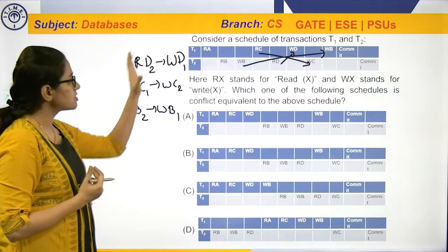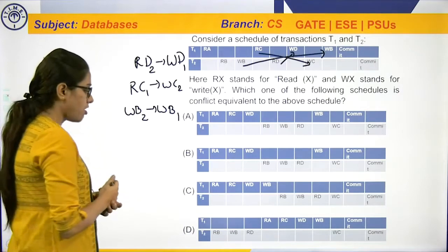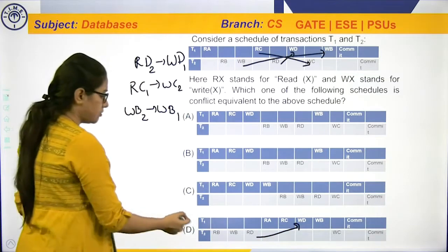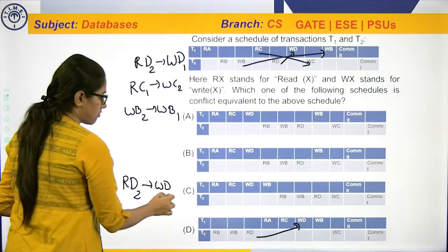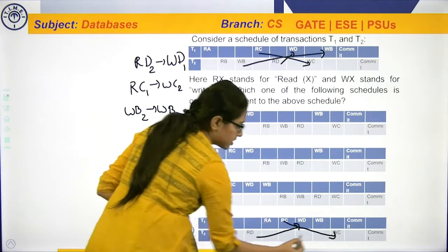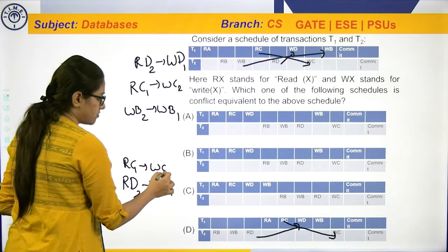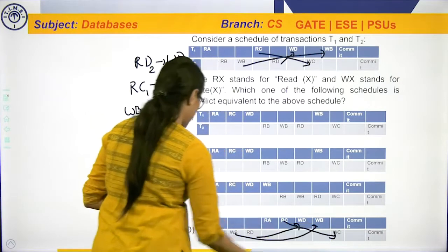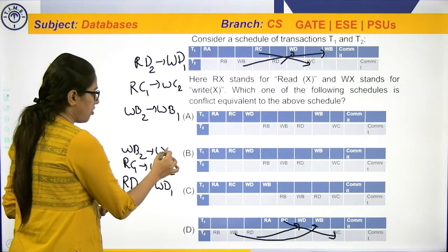We have to check that the same conflicts are present in one of the options. Let us see option D. In option D: Rd and Wd means Rd of T2 and after that Wd of T1. Next, Rc and Wc: Rc of T1 and Wc of T2. Next conflict: Wb and Wb — Wb of T2 followed by Wb of T1.